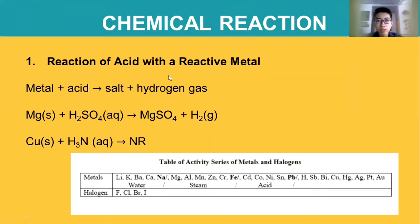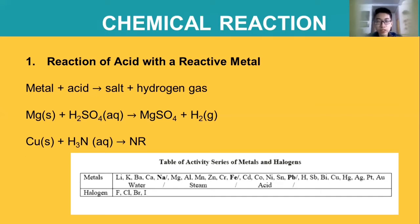The first reaction is acid with a reactive metal. The formula is: metal + acid → salt + hydrogen gas. For example, Mg + H2SO4 yields MgSO4 (magnesium sulfate) + H2 gas. For the second problem, Cu + HCl yields no reaction. According to the reactivity series table, copper is not within the range and hence cannot react with acid, so there is no reaction.